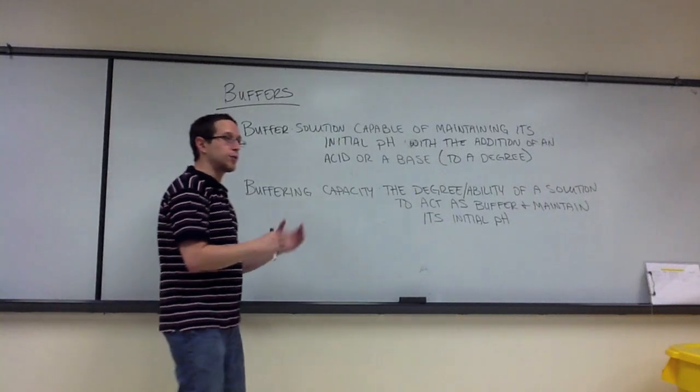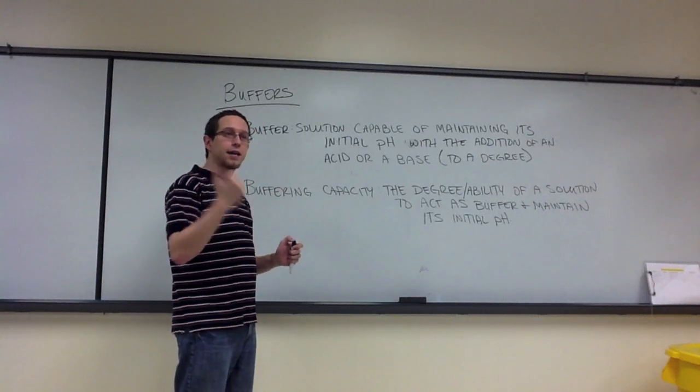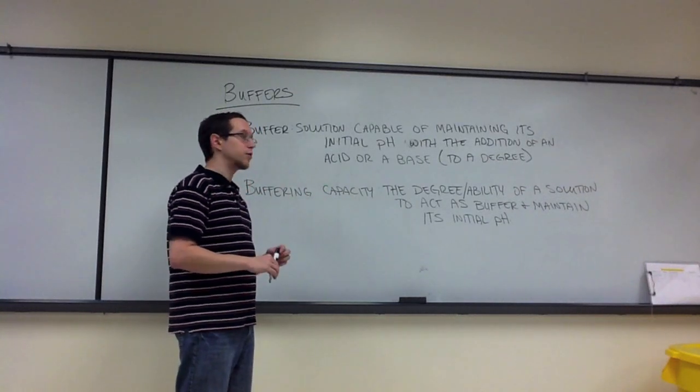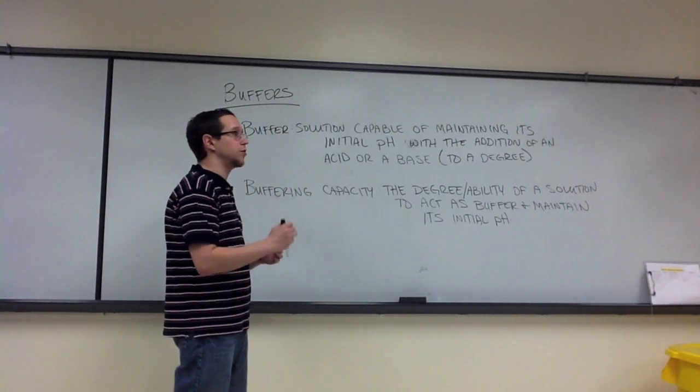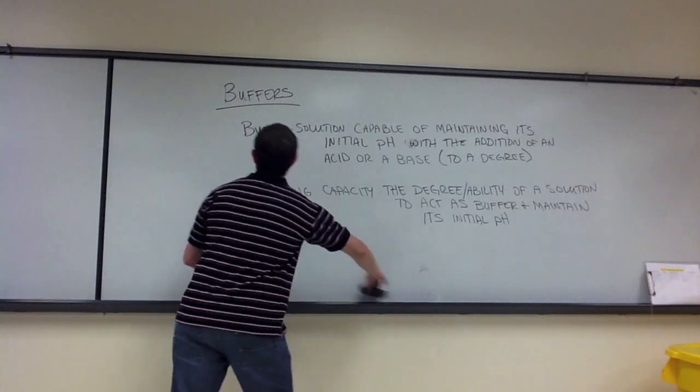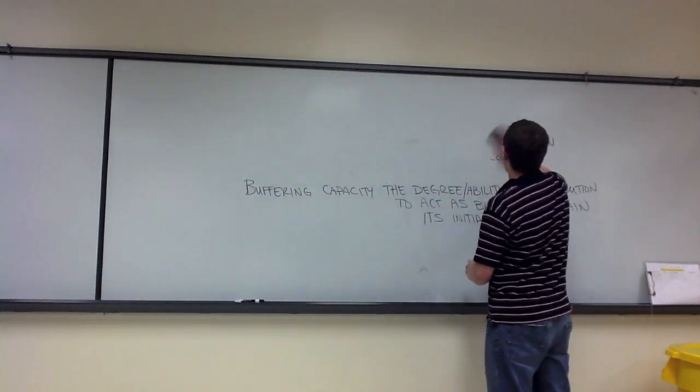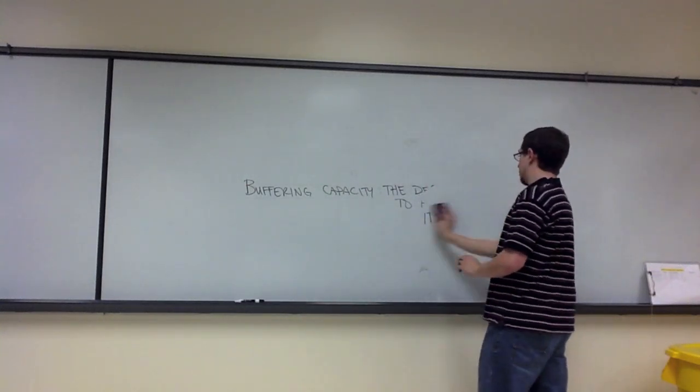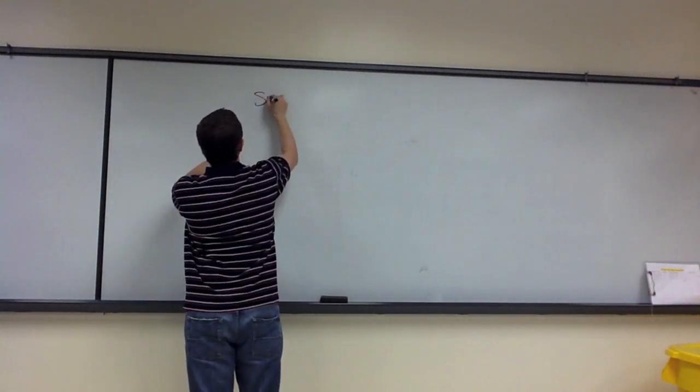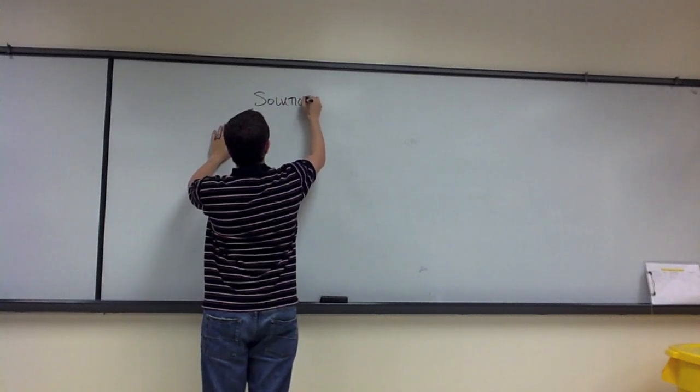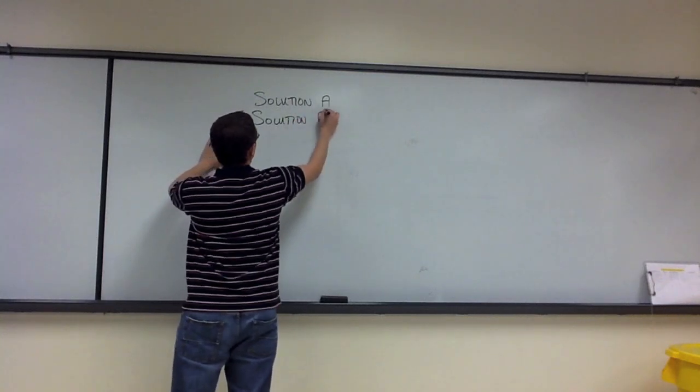So what you did in this exercise is you had two solutions, solution A and solution B, and you systematically added in a milliliter dropwise fashion either an acid or a base to each solution and measured the pH as you did that. So if I draw this on the board, we had solution A and you took its initial pH and we had solution B and you took its initial pH.